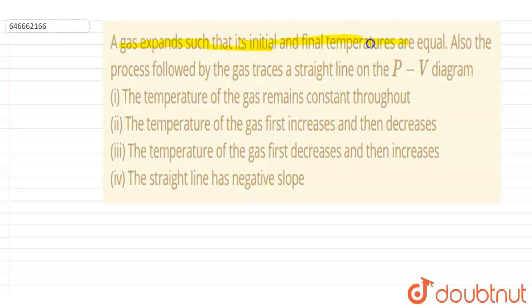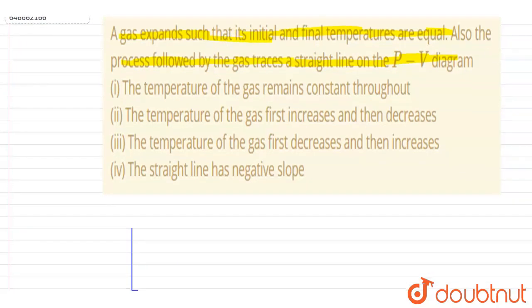Also, the process followed by the gas traces a straight line on the PV diagram. So initial and final temperature are same and the gas follows a straight line on the PV diagram.